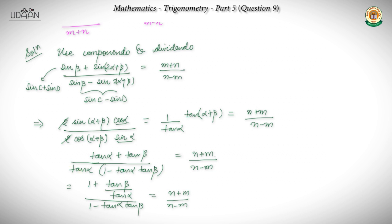Here there is a mistake which we commonly make. What is in the expression? M minus n. It means that we have a sign mistake of minus.